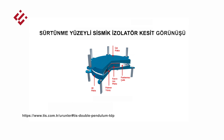Sürtünmeli sarkaç tipi izoratörler ise konkav yüzeyli çelik plakalar ile kayıcı bir yüzey arasındaki sürtünme özelliklerine bağlı olarak enerji sönümleme yeteneğine sahip malzemelerdir. Burada konkav yüzeyin eğrilik yarı çapı ve kayıcı yüzey ile çelik plakalar arasındaki sürtünme katsayısı tasarım açısından önemli parametrelerdir.